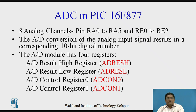The ADC in PIC 16F877 has eight analog channels. Through these eight analog channels, one can apply the analog input to the PIC ADC. These eight analog channels are defined on pins RA0 to RA5 and RE0 to RE2, meaning port A and port E pins are associated with the ADC operation.